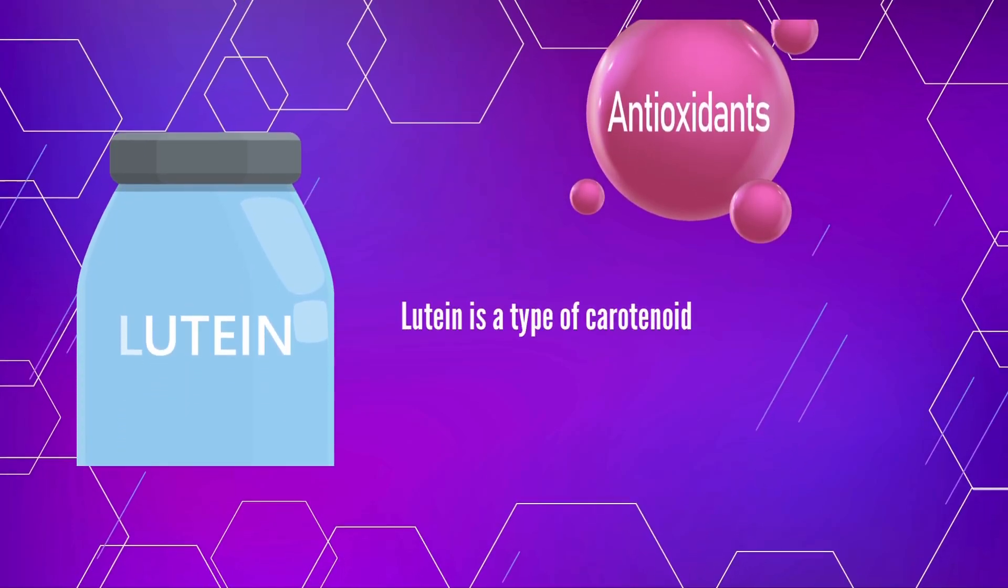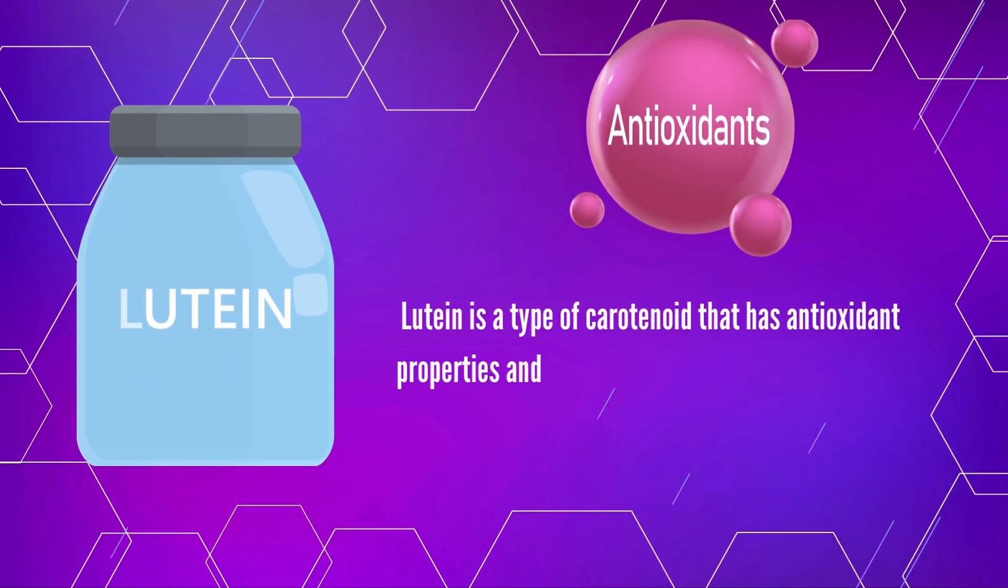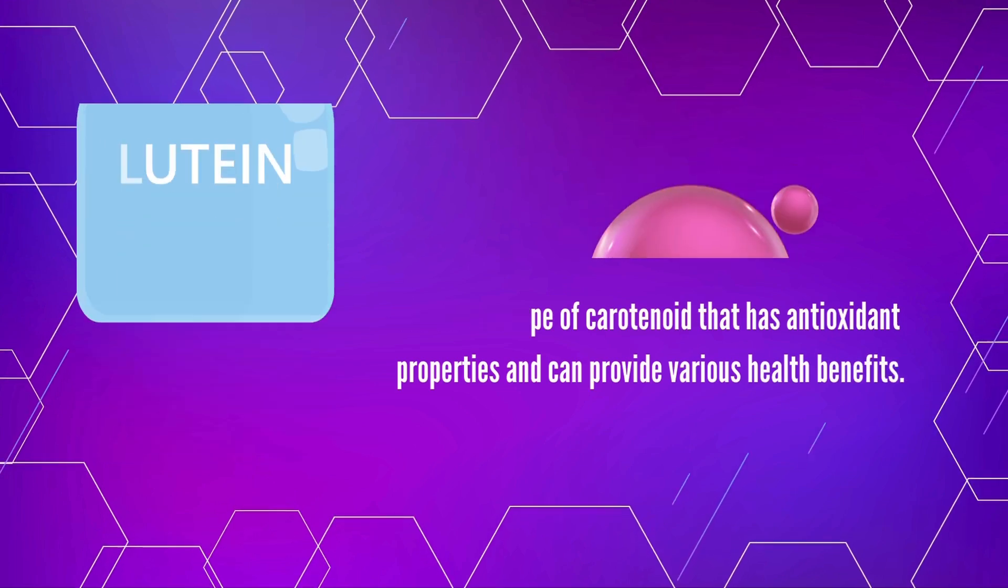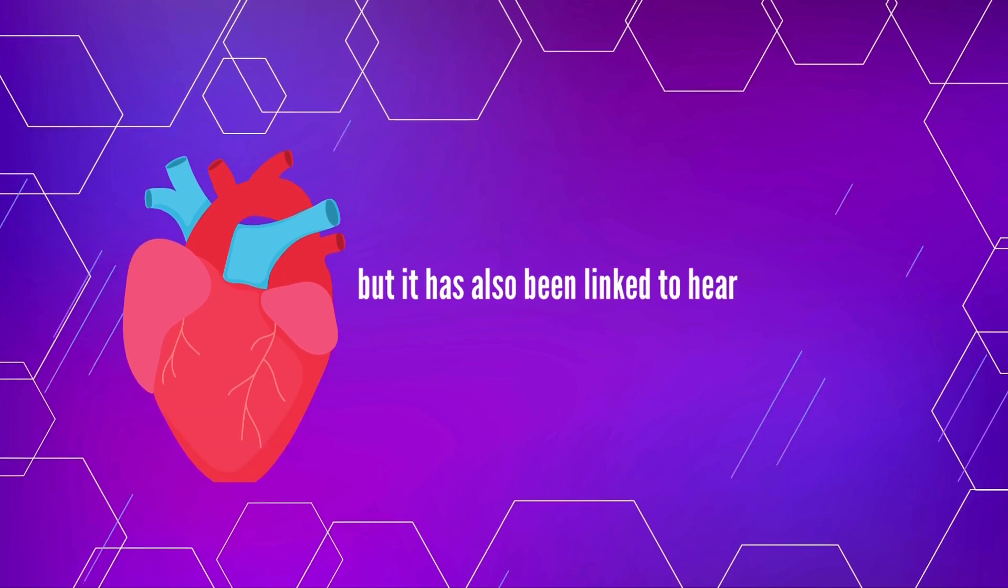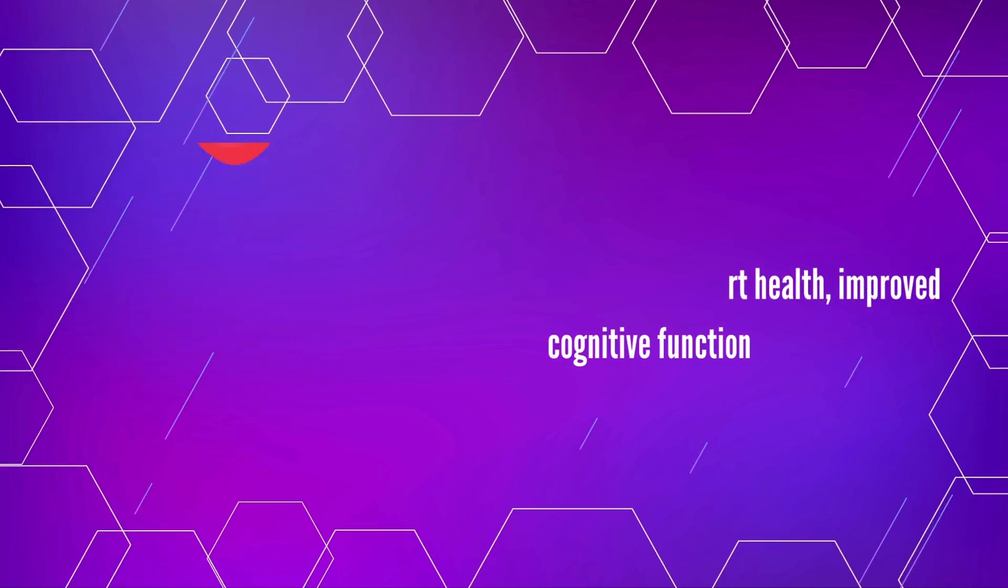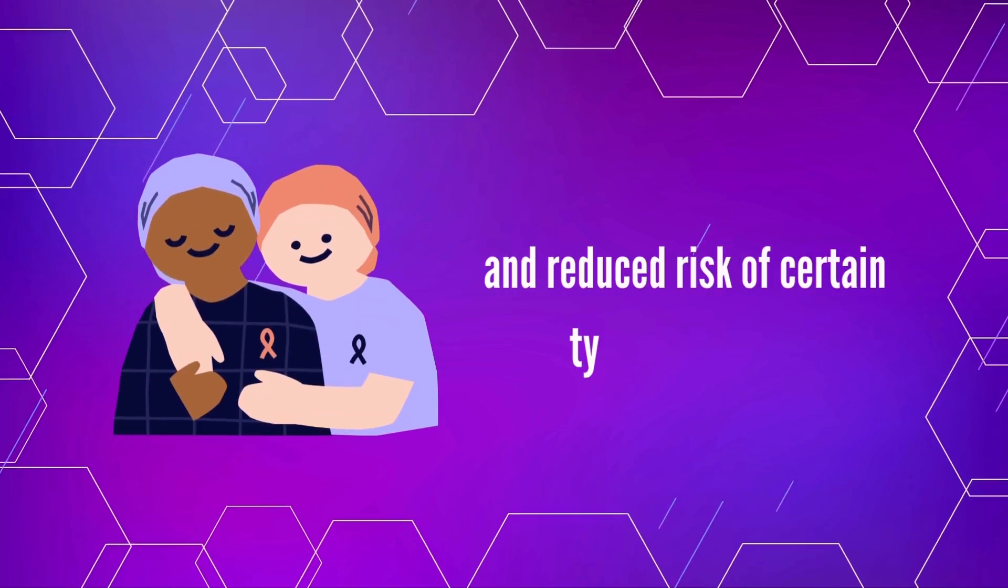Lutein is a type of carotenoid that has antioxidant properties and can provide various health benefits. The most researched benefit of lutein is related to eye health, but it has also been linked to heart health, improved cognitive function, and reduced risk of certain types of cancer.